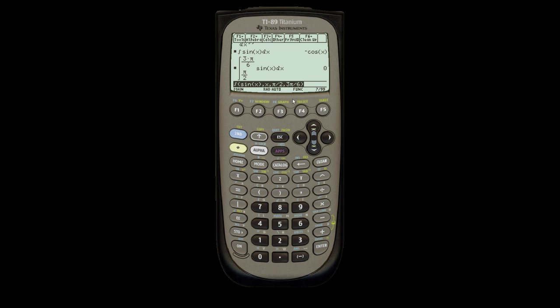Integrates from, sorry, it's lower bound then upper bound. So we go from lower bound to upper bound. So it goes from 3 pi over 6 to pi over 2, gives me 0.